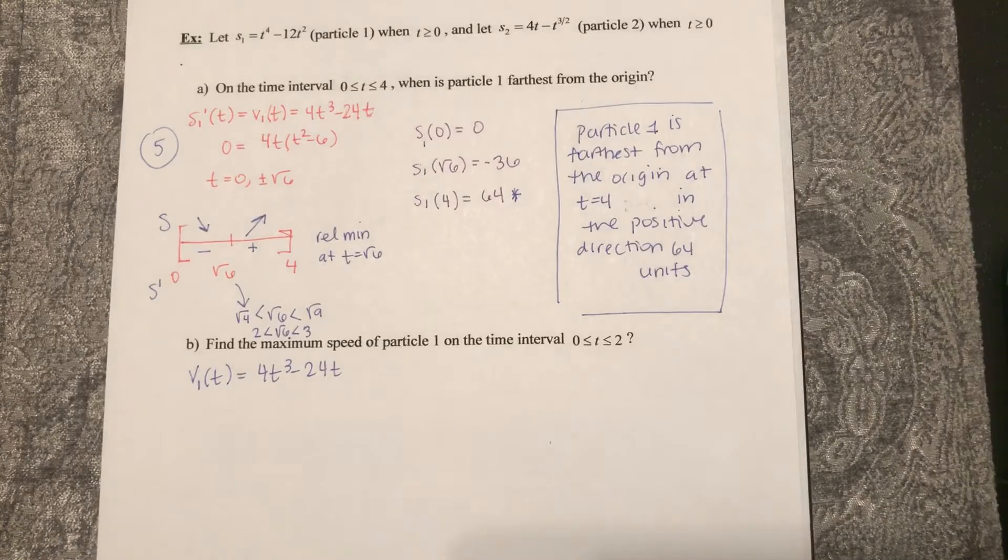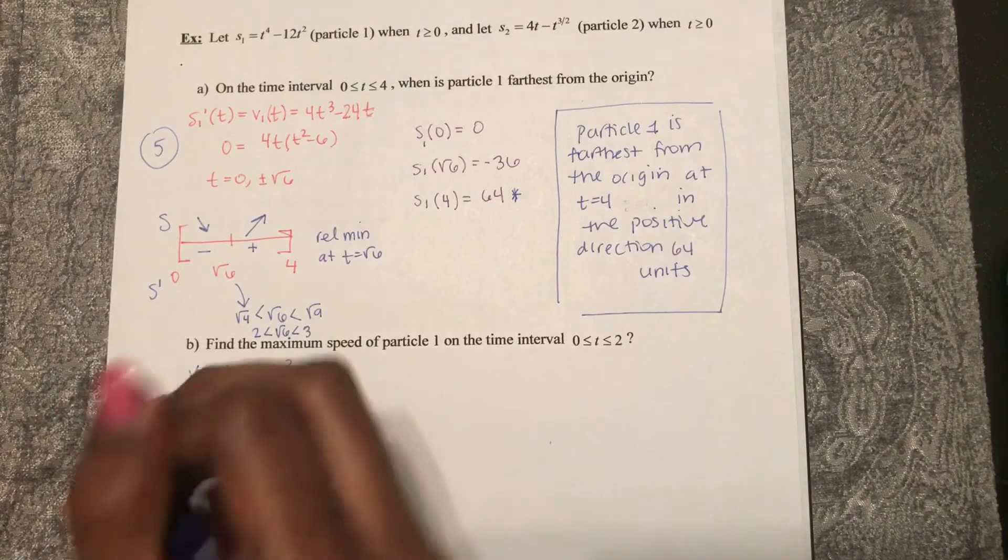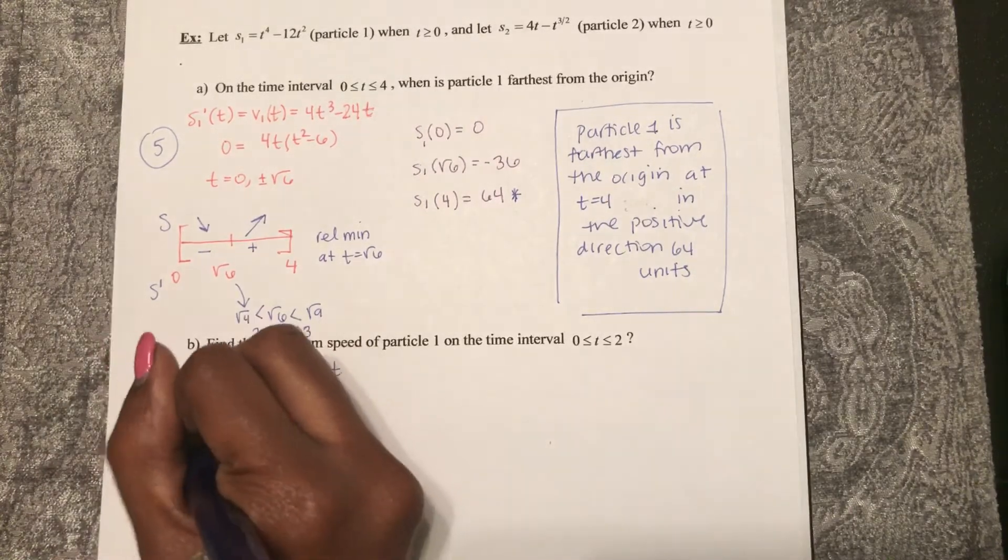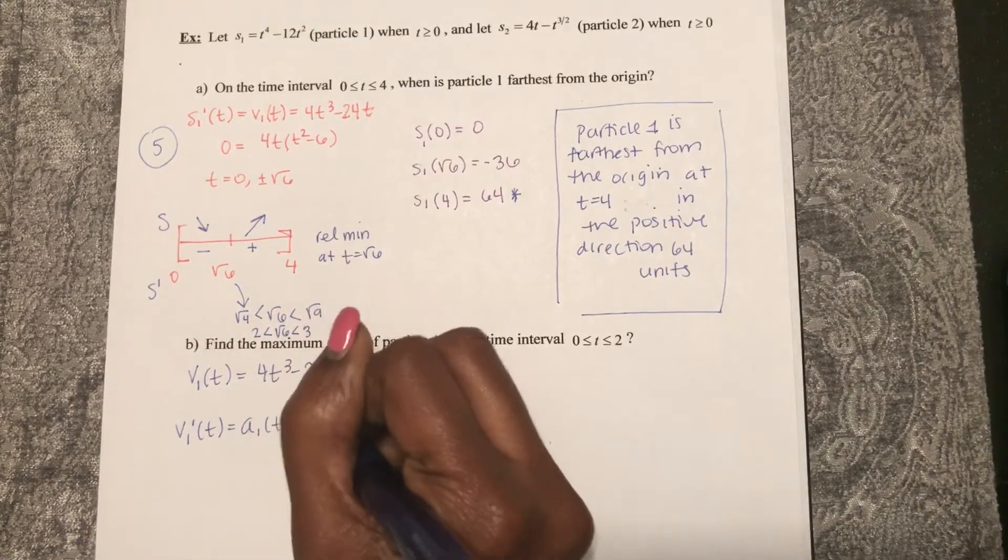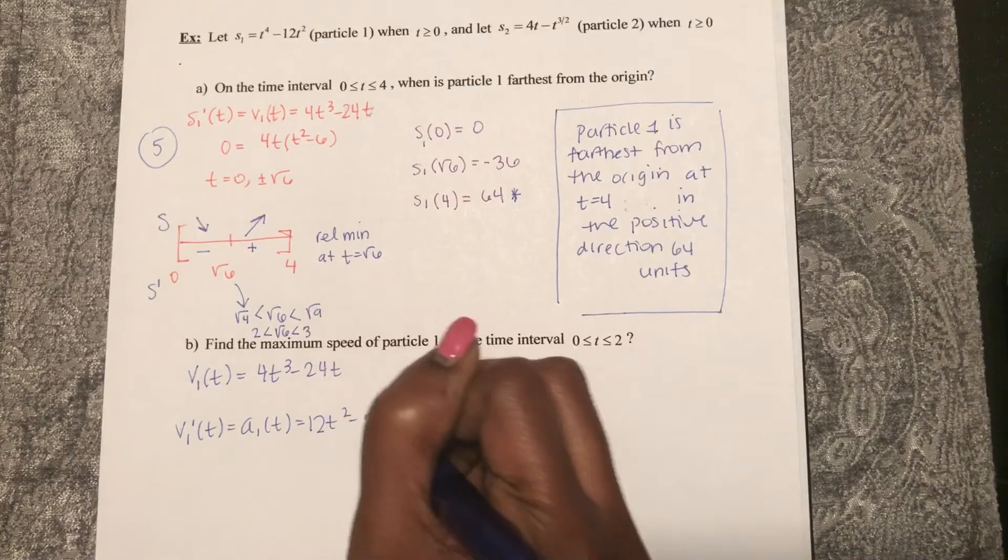So if I'm trying to maximize that velocity, I need to take its derivative. V₁ prime of t, which is A₁ of t, is 12t squared minus 24.